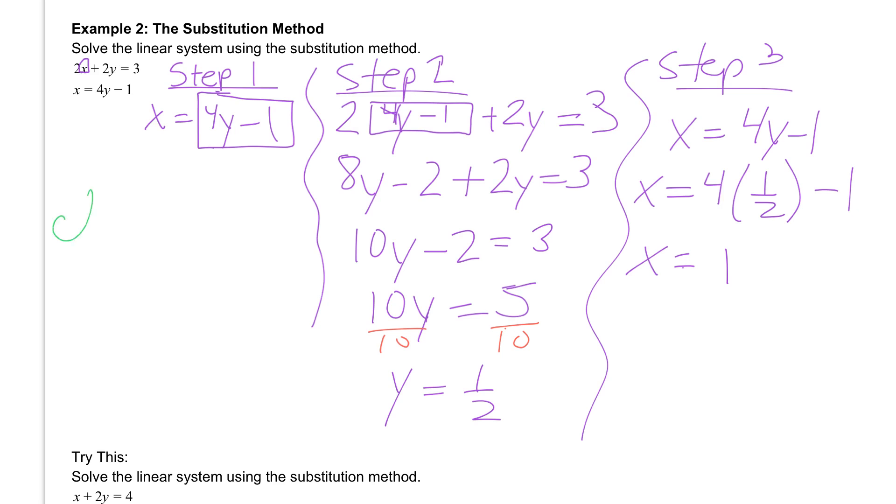Then we are going to do the check step real quick. So let's check it. We've got to check it into both equations. The top and the bottom. We'll start with the top. We have 2 times the x value that we just found. And x we found to be 1. So 2 times 1. Plus 2 times the y value, which is a half. And that's equal to 3. So we have 2 times 1, which is 2. Plus 1, which is 3. So we do get 3 is equal to 3.